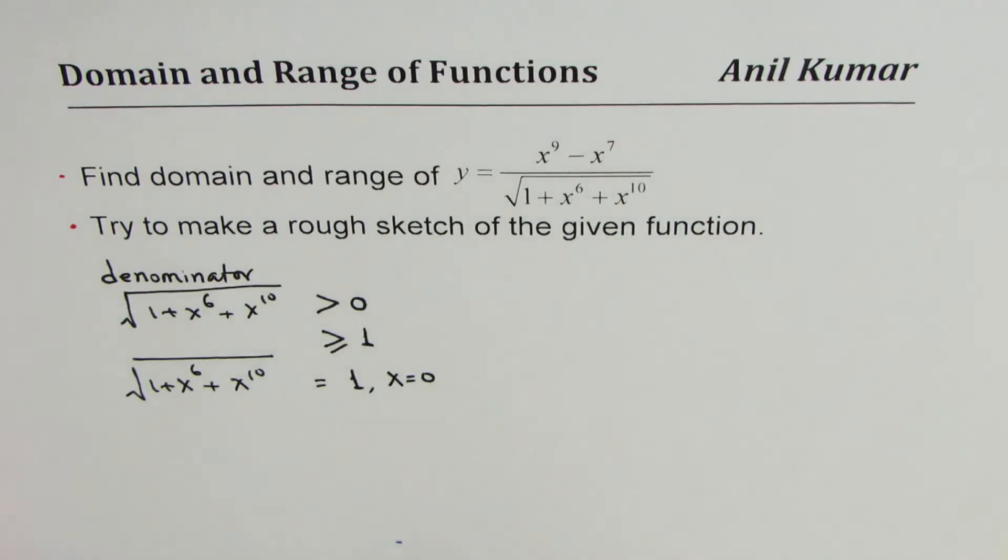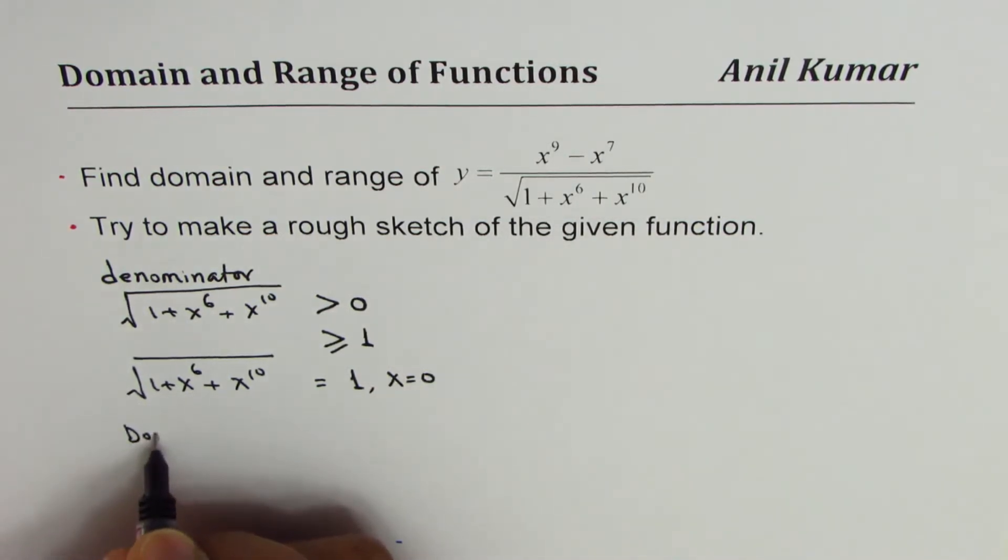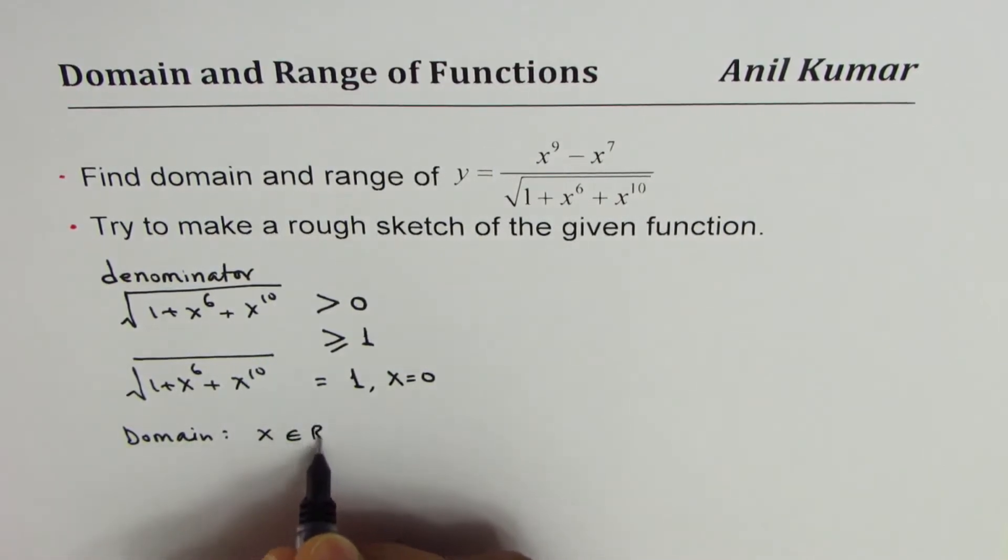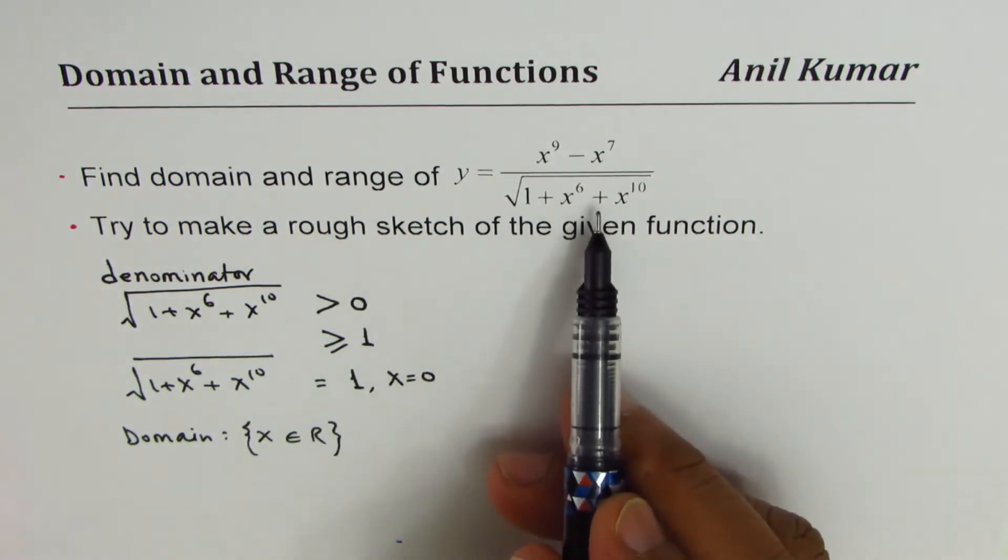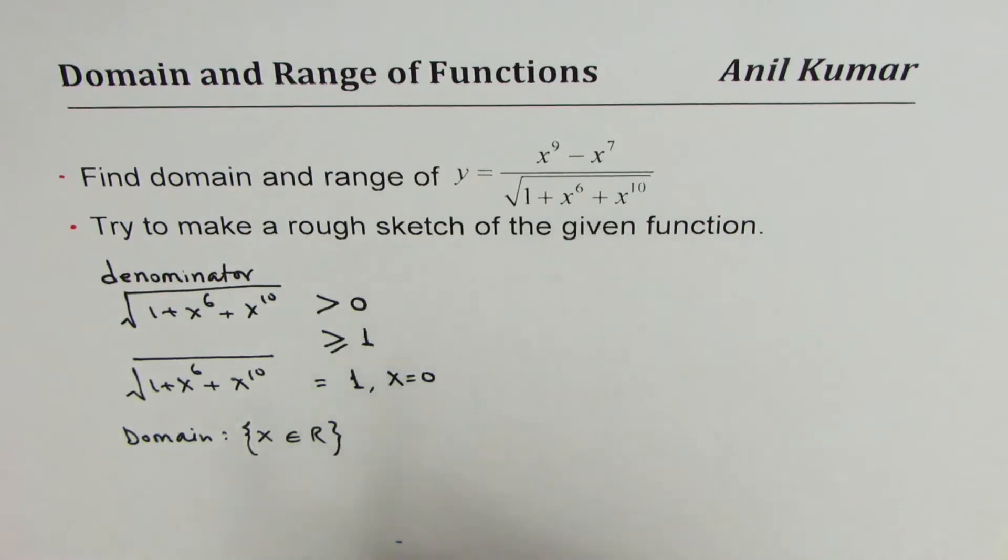So the denominator is never 0, it's always greater than 1. So from there we can say domain is x belongs to real numbers. That is how you can analyze for the domain and you show that the domain of this function is all real numbers, since the denominator is never 0.